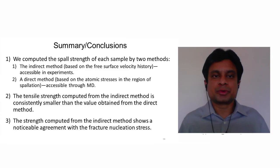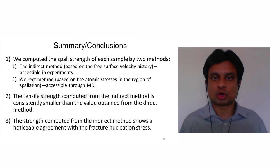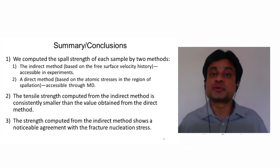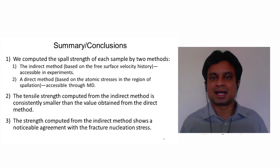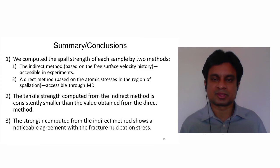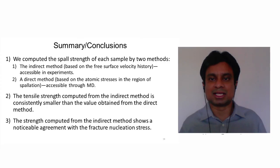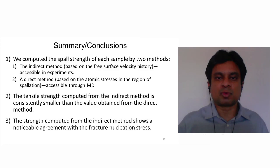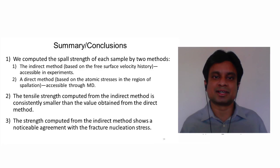We computed the spall strength of each polymer sample by following two methods. The first is the indirect method, based on the free surface velocity history, which is very commonly used in experiments. The second is a direct method, based on the atomistic stresses in the region of spallation, which is only accessible through molecular dynamics simulations. The tensile strength computed from the indirect method is consistently smaller than the value from the direct method. The spall strength from the indirect method shows a noticeable agreement with the fracture nucleation stress, because the spall signal contains information about fracture initiation. Thank you very much for your attention.